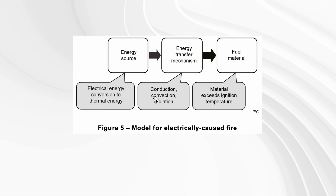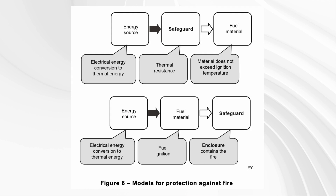That creates heat that is then transferred to some kind of potential fuel. The standard also gives us two models for protection against fire. First, you can have a safeguard between the energy source and the fuel material that prevents the energy from being transferred. The second approach — sometimes the best that can be done — is that even if energy can still reach the fuel and cause ignition, there is an enclosure or casing around the product that will contain the fire so it does not spread outside the product.